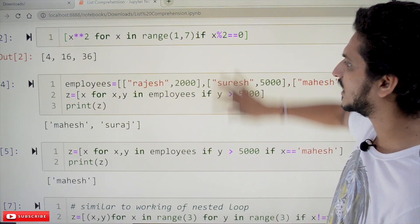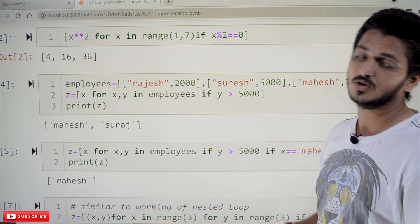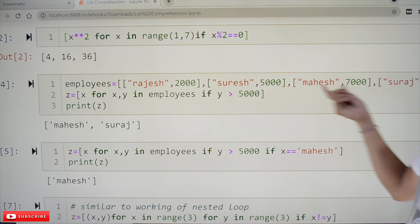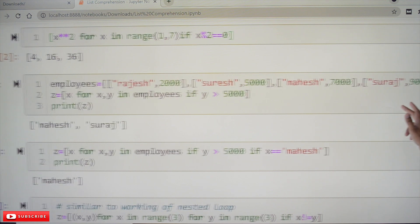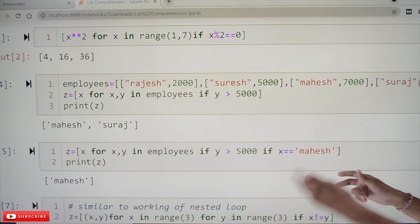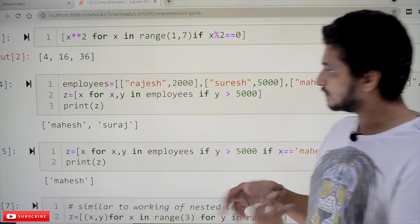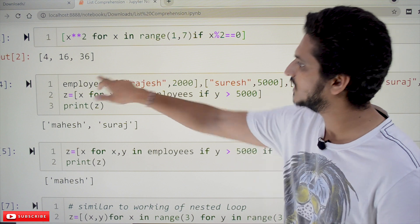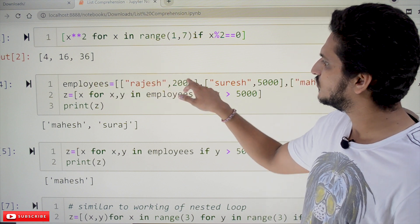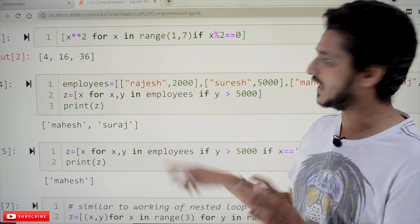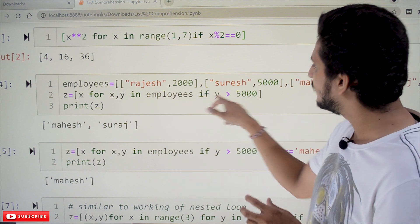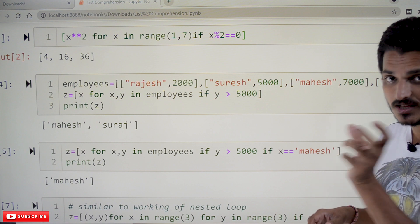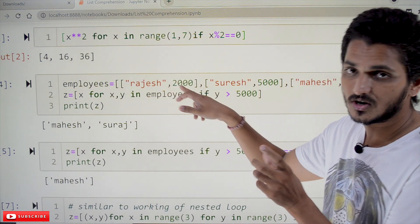This is how we use and coming to the next one employees. We are taking a list Rajesh 2000, Suresh 5000, Mahesh 7000 and Suresh 9000. This is what our list nested list. And from this we are taking for x, y in employees. Take the employees x is taken as Rajesh, y is taken as 2000. That is what x, y means.